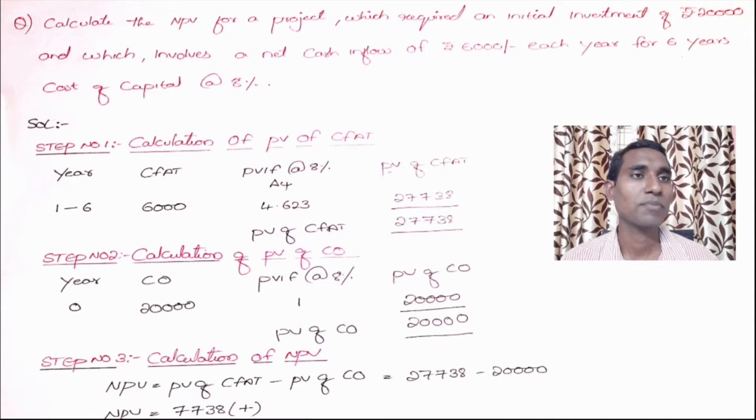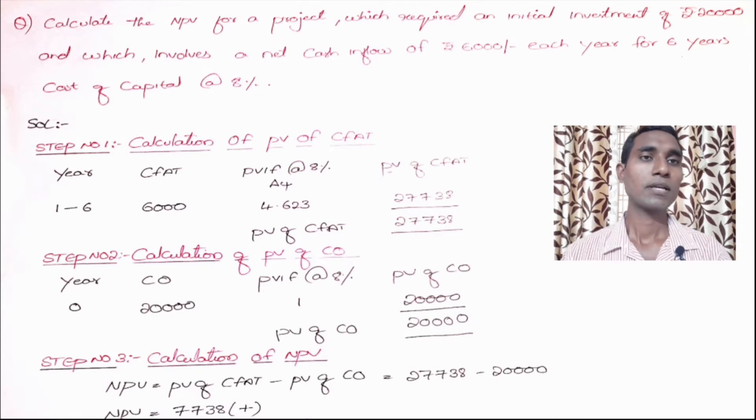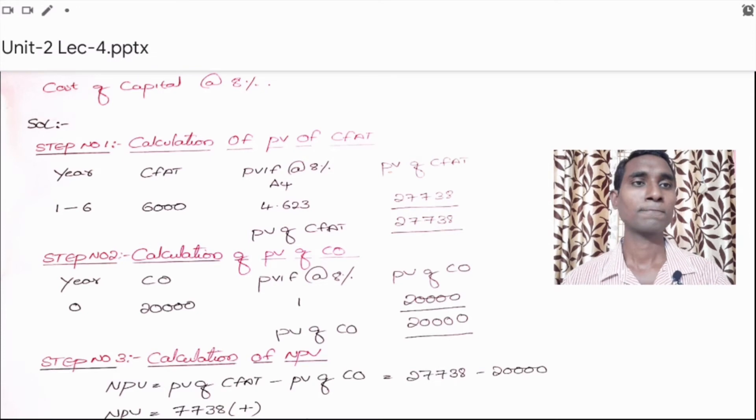The project involves a net cash inflow of rupees 6,000 each year for six years, and cost of capital is 8%. The most important thing in order to use this method for computation of NPV is here—the sentence 'involves' is key.